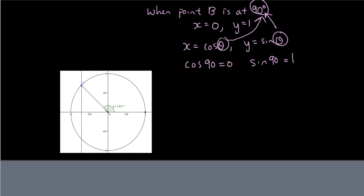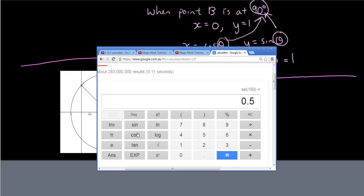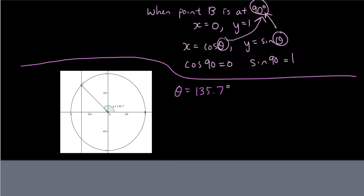So right now at this point here we have theta is equal to, theta is equal to 135.7 degrees. Now let's try typing in the calculator. We have theta cosine theta. So cosine theta equals